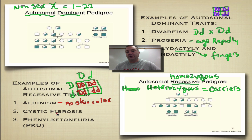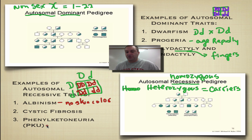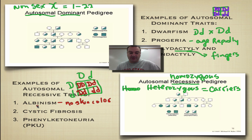Cystic fibrosis is another autosomal recessive trait — we'll cover it in another screencast — but basically your body produces very thick mucus that tends to plug your digestive system and lungs. And then PKU, which stands for phenylketonuria: you have a hard time breaking down phenylalanine, which can cause brain deformities if it's in your diet. But if you avoid phenylalanine in your diet, you're completely normal. In all three of these, you typically get the condition because both mom and dad are carriers.